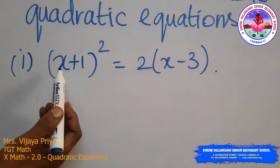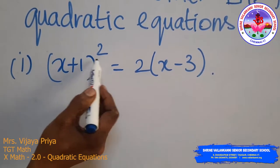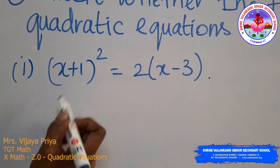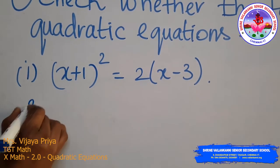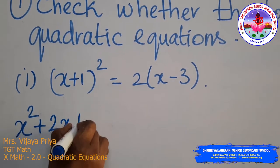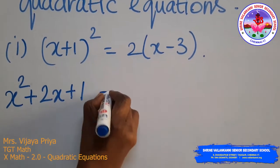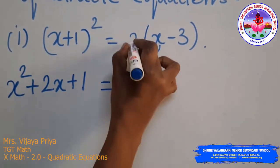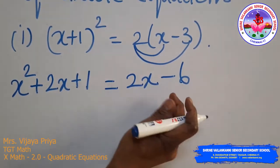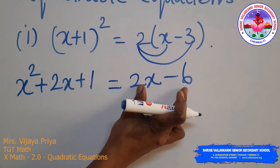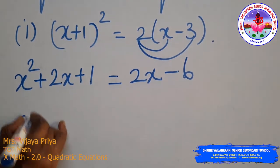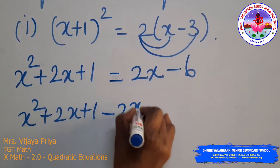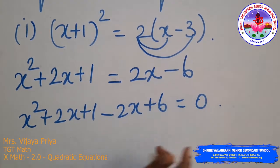Looking at the left hand side: (x + 1)², using the algebraic identity, we get x² + 2x + 1. Expanding the right hand side: 2(x − 3) gives 2x − 6. Shifting all right hand side terms to the left hand side, we get x² + 2x + 1 − 2x + 6 = 0.